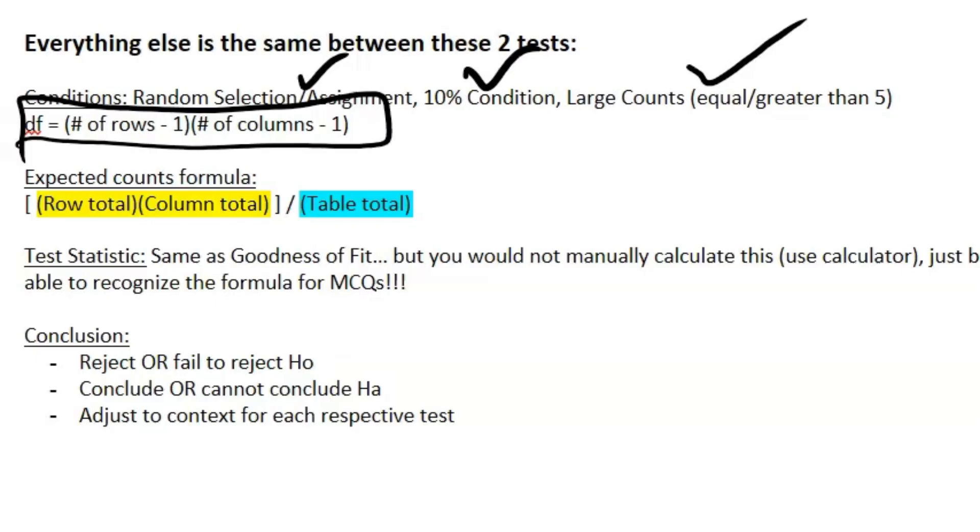This is because you have a two-way table, and when you're dealing with that, that changes your degrees of freedom. And then your expected counts formula also changes. Now you can plug this into your calculator and do matrices to get it done, or you can just use this formula—you can pick either way. There's really no better way to do it in this case.